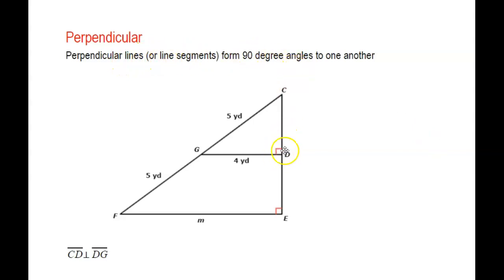Finally, the last symbol I want to go over is perpendicular. What does it mean to be perpendicular? When two lines or line segments form 90-degree angles, that's indicated by this little red half square. When they're perpendicular to one another, they form 90-degree angles, and I would write it this way: line segment CD is perpendicular to DG.